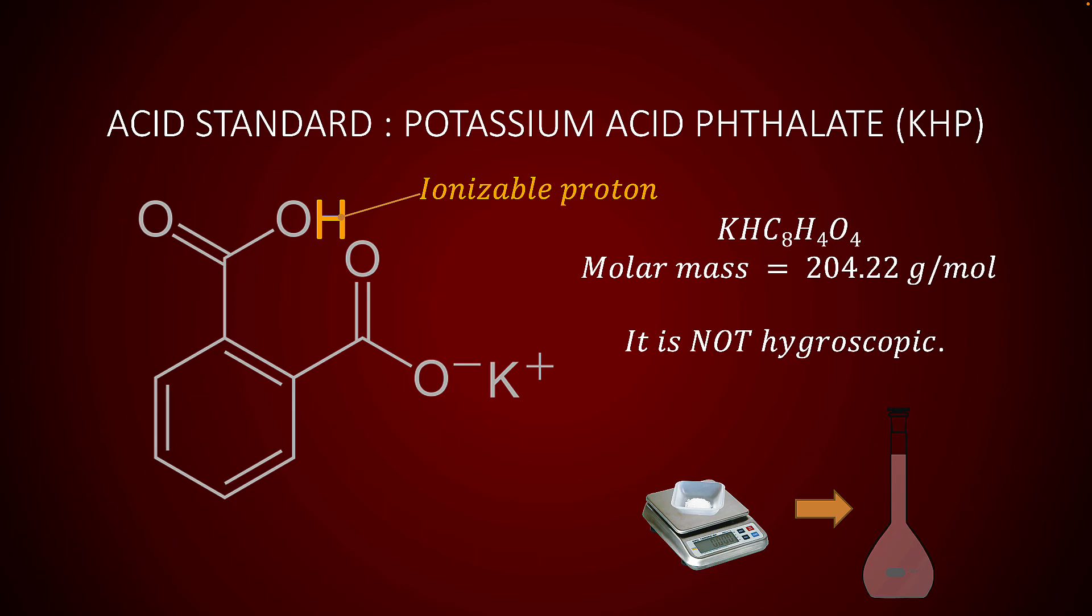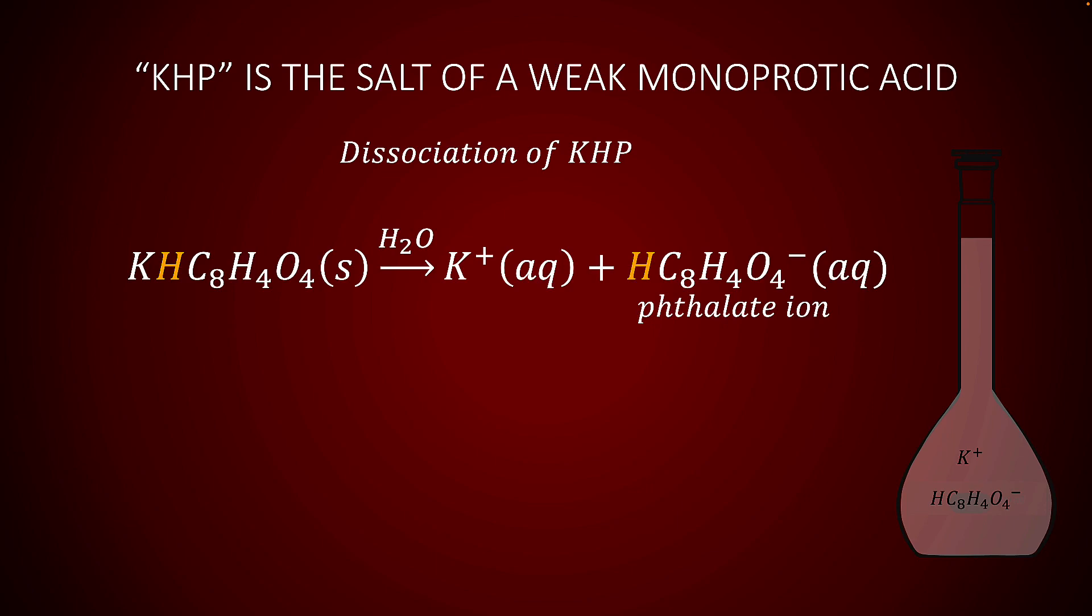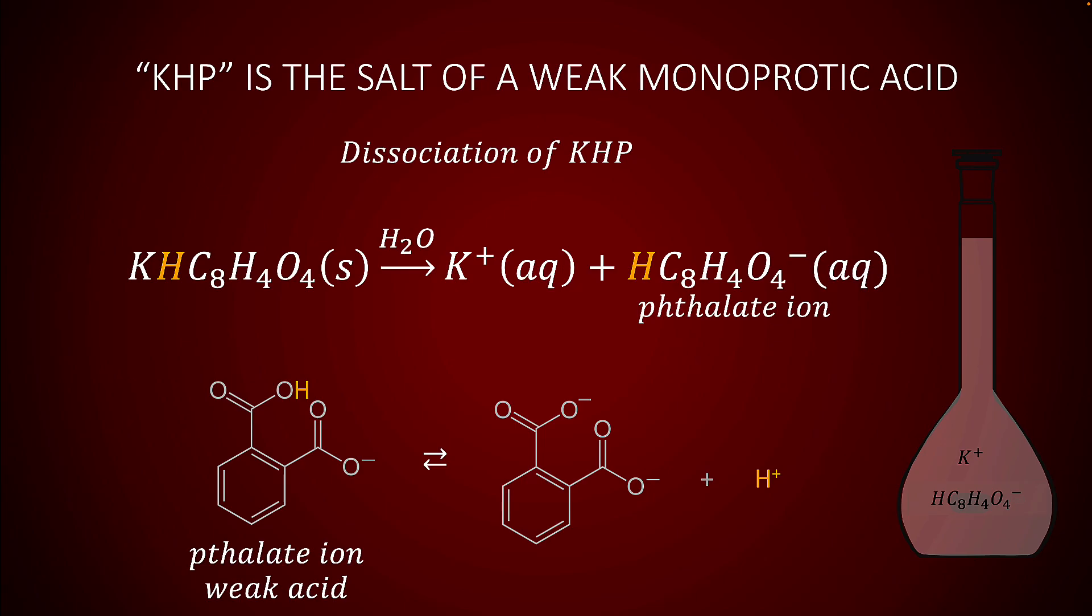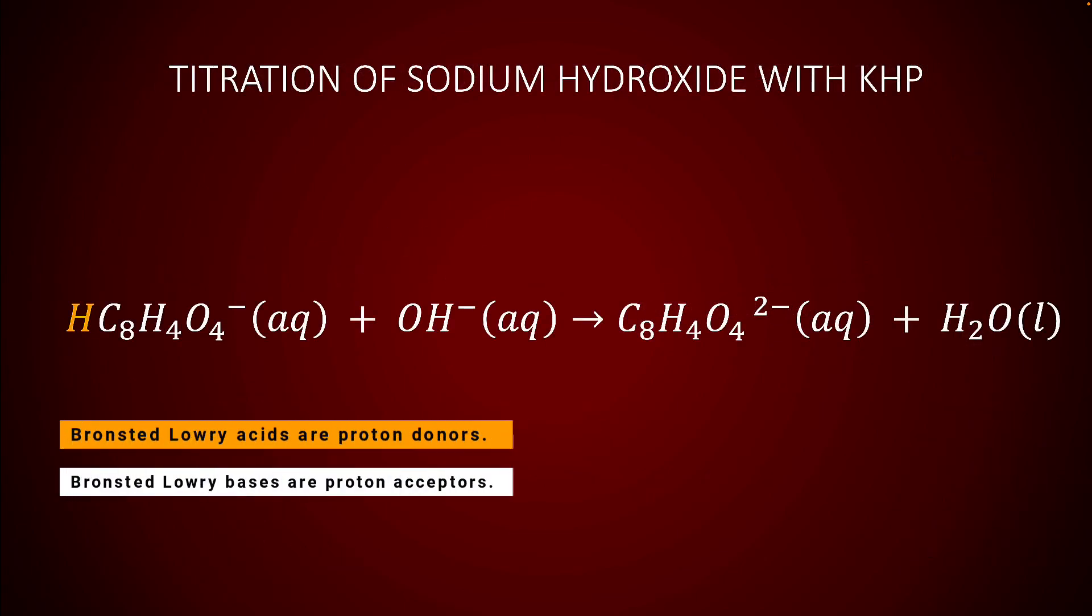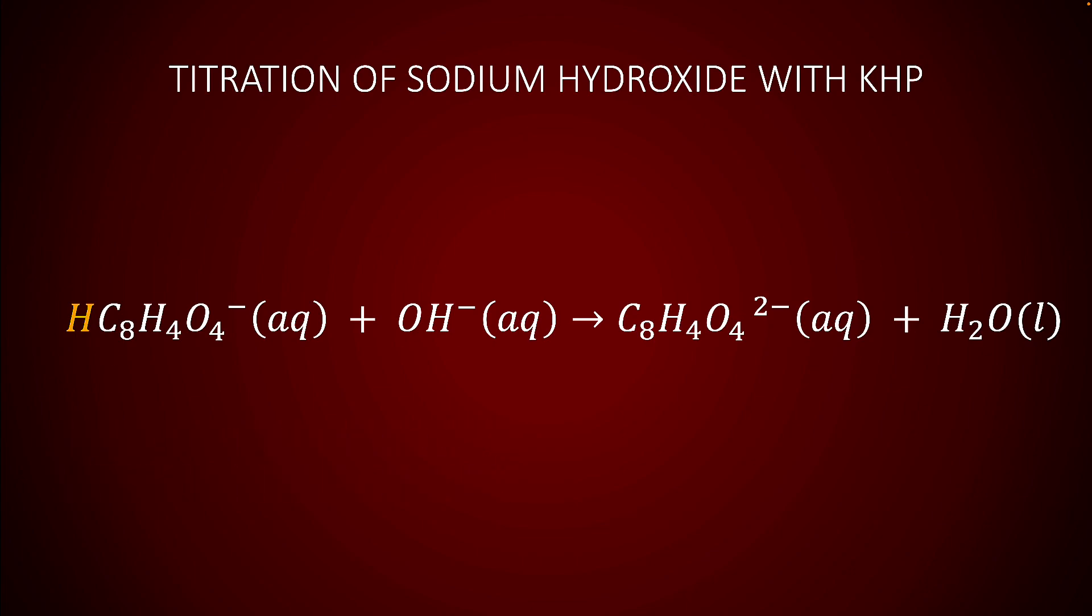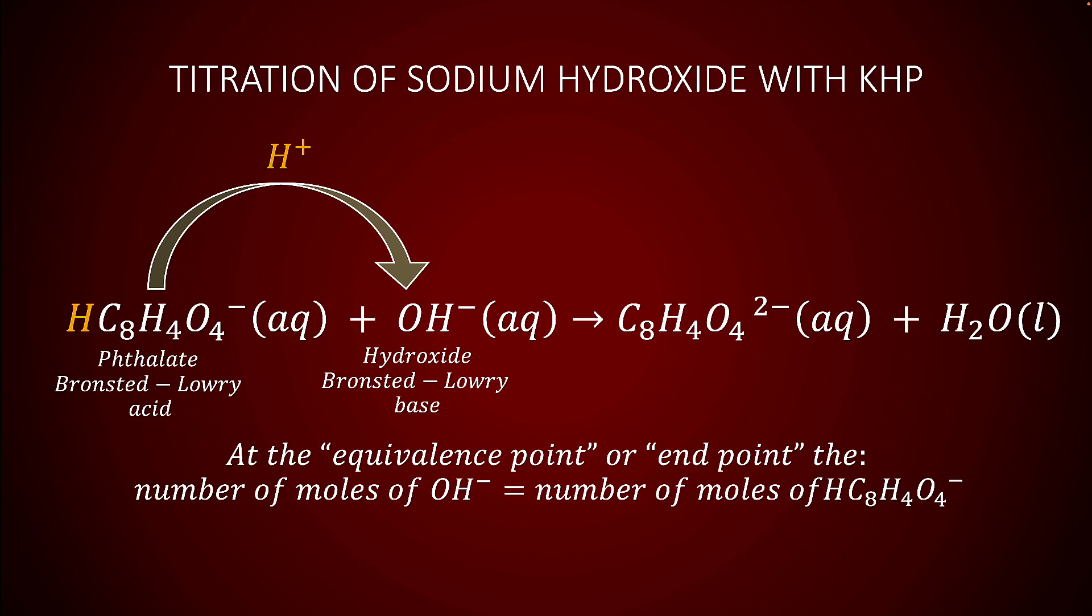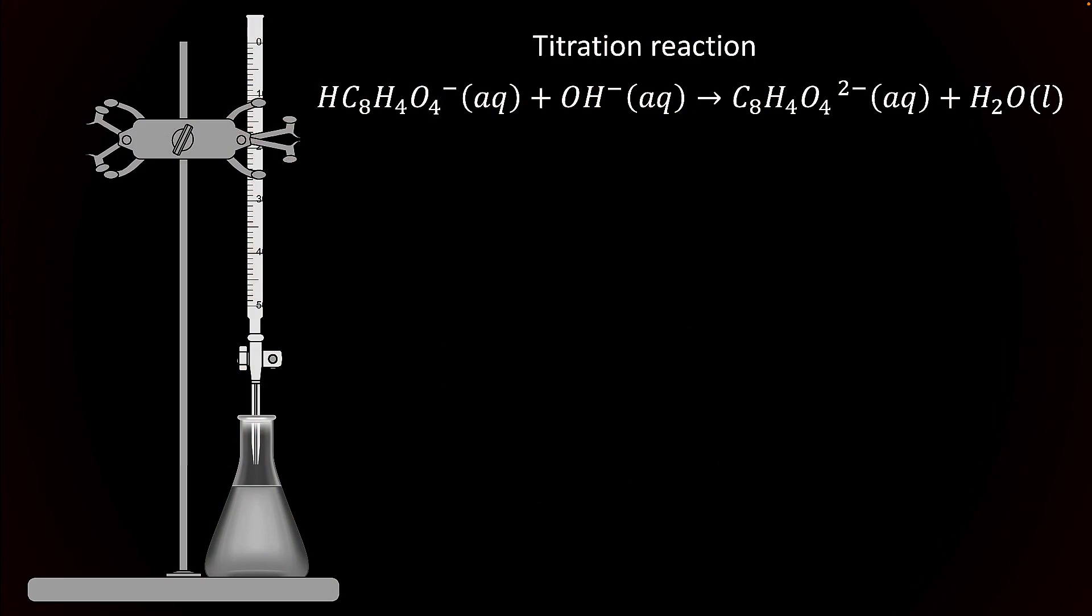When KHP dissolves in water, it dissociates into potassium and phthalate ions. Phthalate behaves as a weak monoprotic acid in water. When phthalate is titrated with hydroxide, a Bronsted-Lowry acid-base reaction takes place in which a proton is transferred from the phthalate to hydroxide. At the equivalence point of the titration, the number of moles of phthalate are equal to the number of moles of hydroxide.